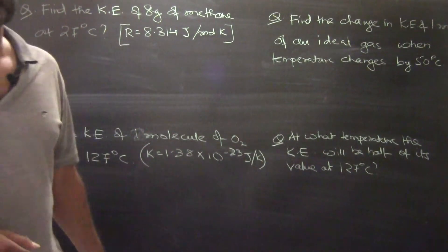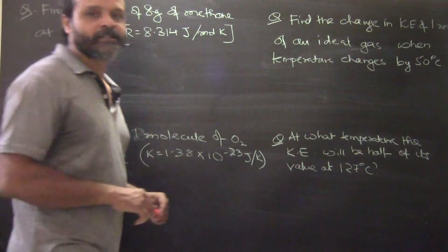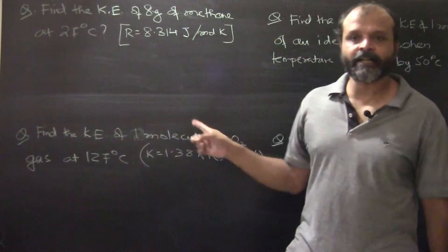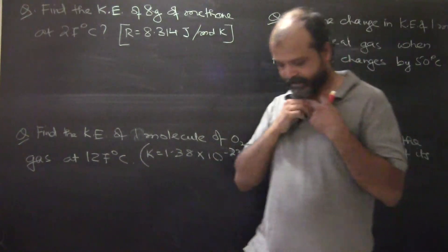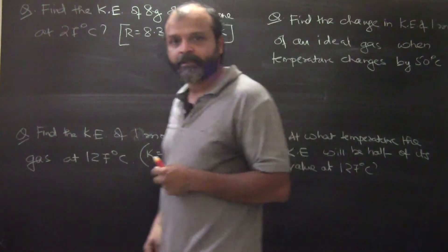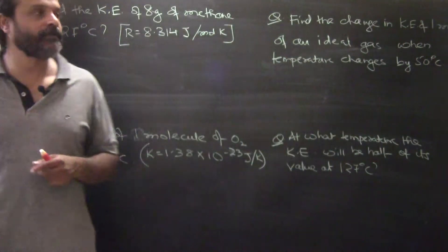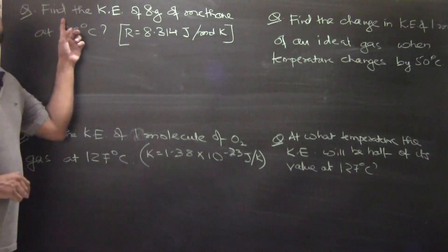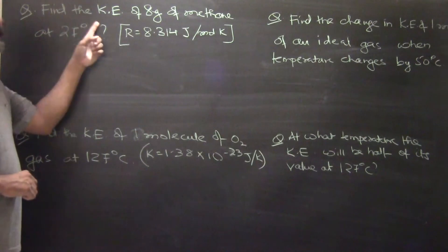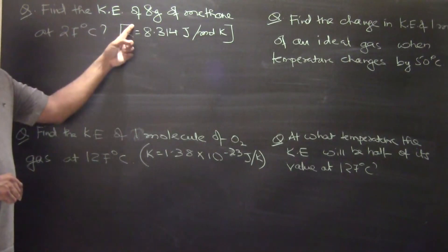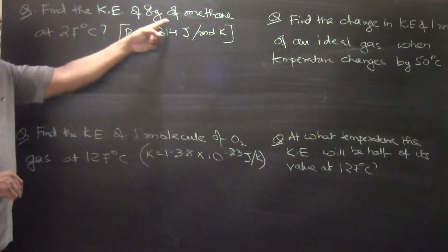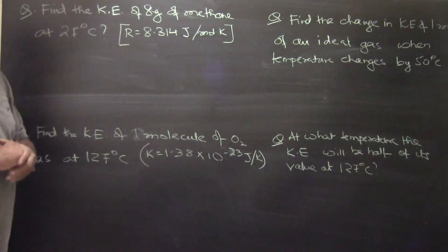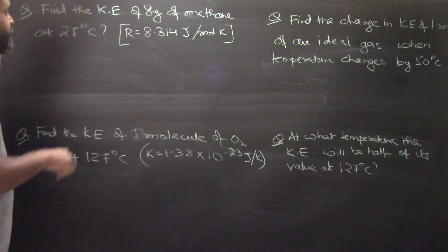Alright, we have certain numericals based on whatever we have studied till now in kinetic theory of gases, and we will continue with them. So, the first numerical that comes your way is: find the kinetic energy of 8 gram of methane at 27 degree centigrade.